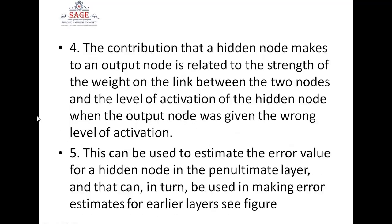With the help of error back propagation, we can stop this loop. The contribution that a hidden node makes to an output node is related to the strength of the weight on the link between the two nodes and the level of activation of the hidden node when the output node was given the wrong level of activation. This can be used to estimate the error value for the hidden node in the penultimate layer, and that can in turn be used in making error estimations for earlier layers.